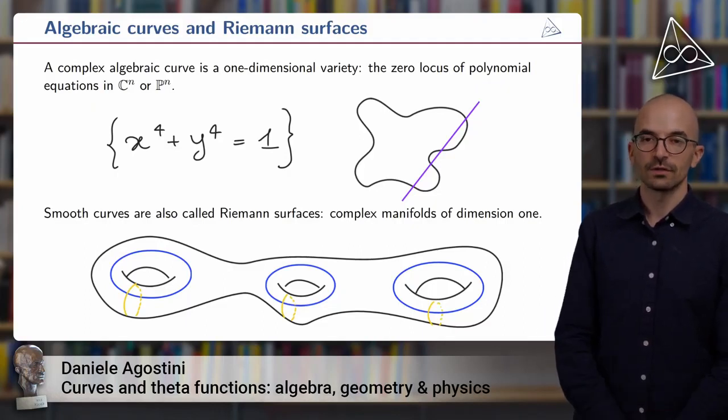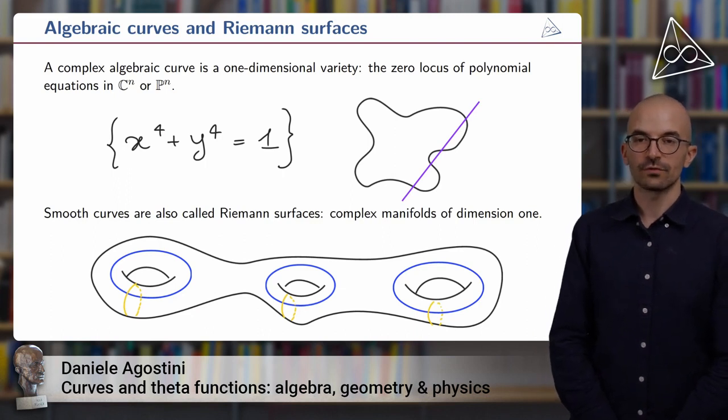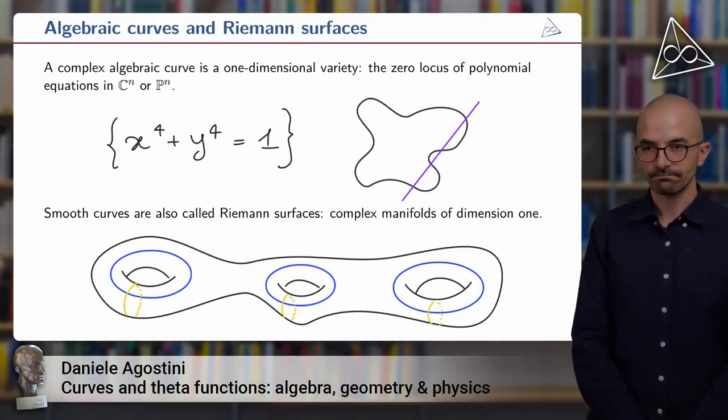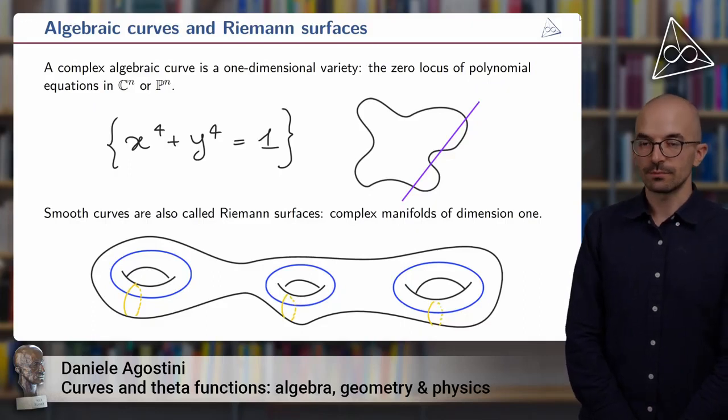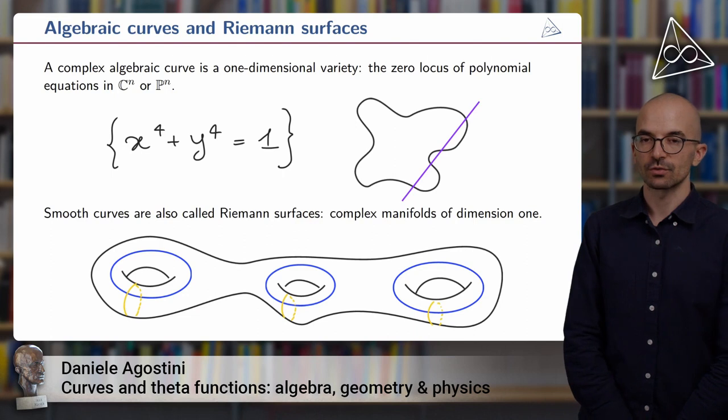So at least the real points of this curve look like a plane curve of degree four. The degree four can be seen from the fact that a general line intersects it in four distinct points. And what's important about curves is that they have dimension one, so complex dimension one.